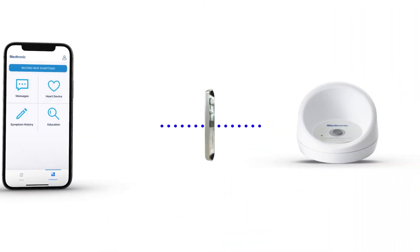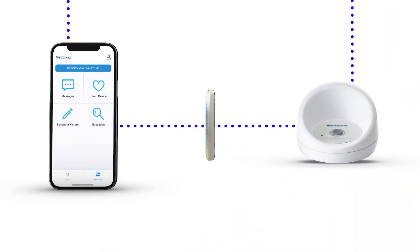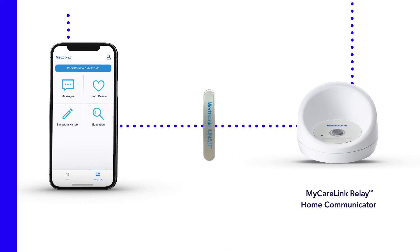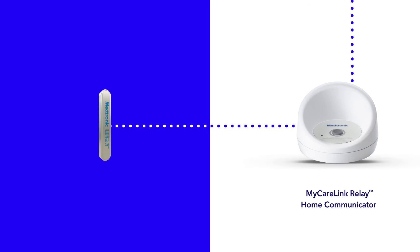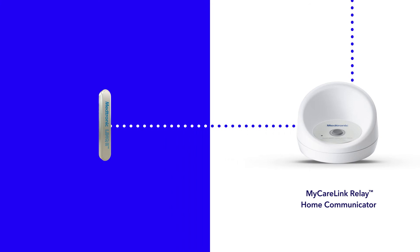The second method for sending data to your clinic is through the MyCareLink Relay Home Communicator. This option has fewer steps than the app, but only transmits data when you're at home near your bed. To use the home communicator, plug it in within 10 feet of your bed and make sure that it has a strong cellular signal or Wi-Fi connection.